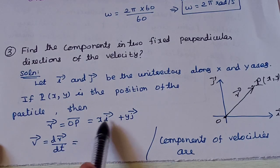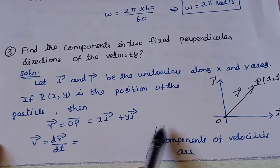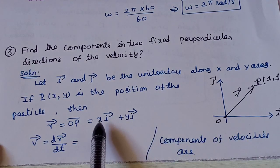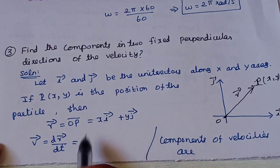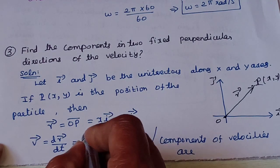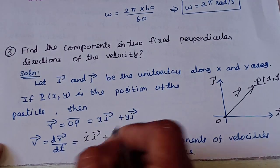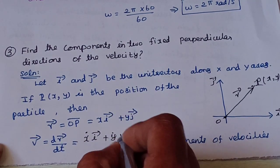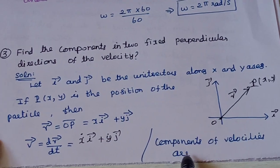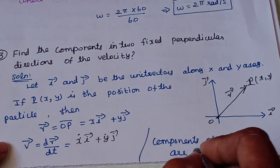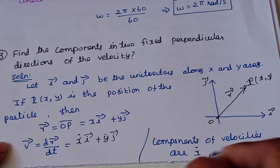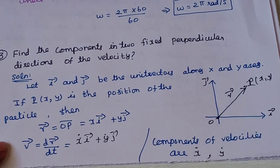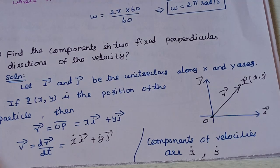The velocity is the rate of change of displacement, so v = dr-vector/dt. Since i-vector and j-vector are unit vectors along x and y axes, and x, y are functions of t, differentiating gives v = ẋ·i-vector + ẏ·j-vector. So the components of velocity are ẋ in the direction of i-vector and ẏ in the direction of j-vector.